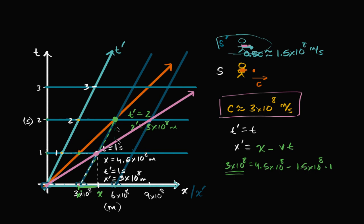So it really forces us to question all of our assumptions. What are the assumptions that we made in this Newtonian world? Well, we assumed that time is absolute — that one second passing for me is going to be one second passing for my friend. That's just our everyday notion. If I'm in a car and you're not in a car, and we both have watches and we synchronize our watches, they seem to stay synchronized. But maybe we need to loosen this assumption.